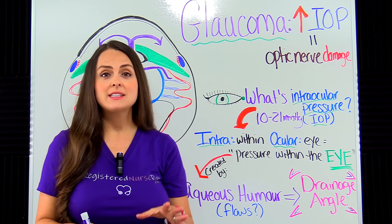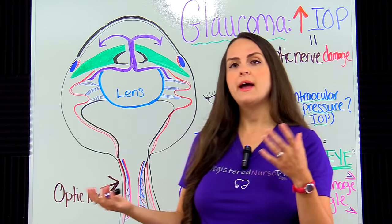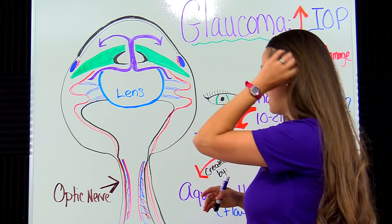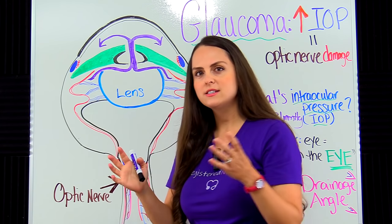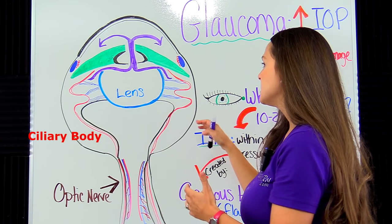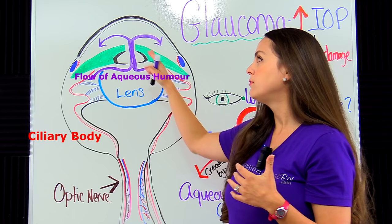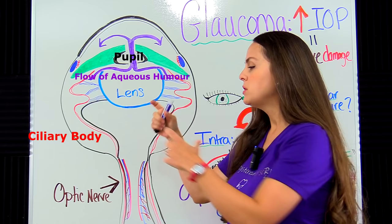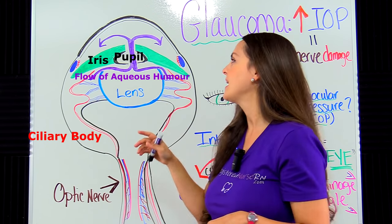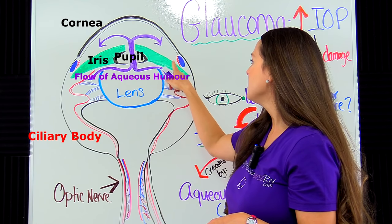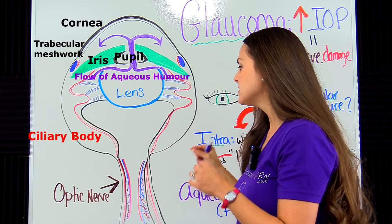Now let's talk about how aqueous humor flows through the eye and compare that to open and angle closure glaucoma. Here we have a cross-sectional view of the eye. In the drawing, in red is the ciliary body which produces the aqueous humor. In purple is the flow path of the aqueous humor. In black is the pupil opening. In green is the iris. We also have the cornea, and then the trabecular meshwork and Schlemm's canal, which is how aqueous humor leaves this part of the eye.